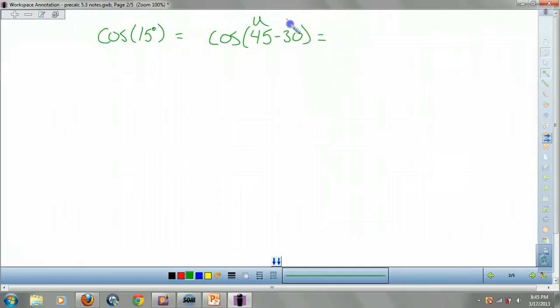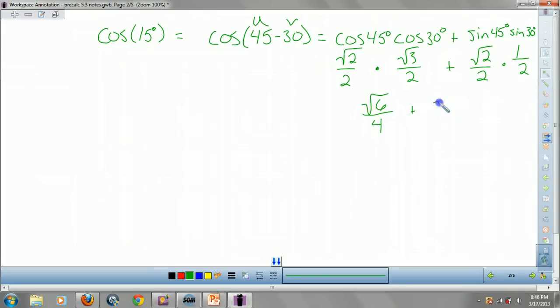Which now, if I use this as my u and this is my v, I get cosine of 45 times cosine of 30. That's minus, so this will be plus. Sine of 45 times sine of 30. Which we did all these before, right? That's just root 2 over 2. Cosine of 30 is root 3 over 2. Sine of 45 is root 2 over 2. Sine of 30 is a half. So actually, we're going to get root 6 over 4 plus root 2 over 4. So root 6 plus root 2 all over 4.